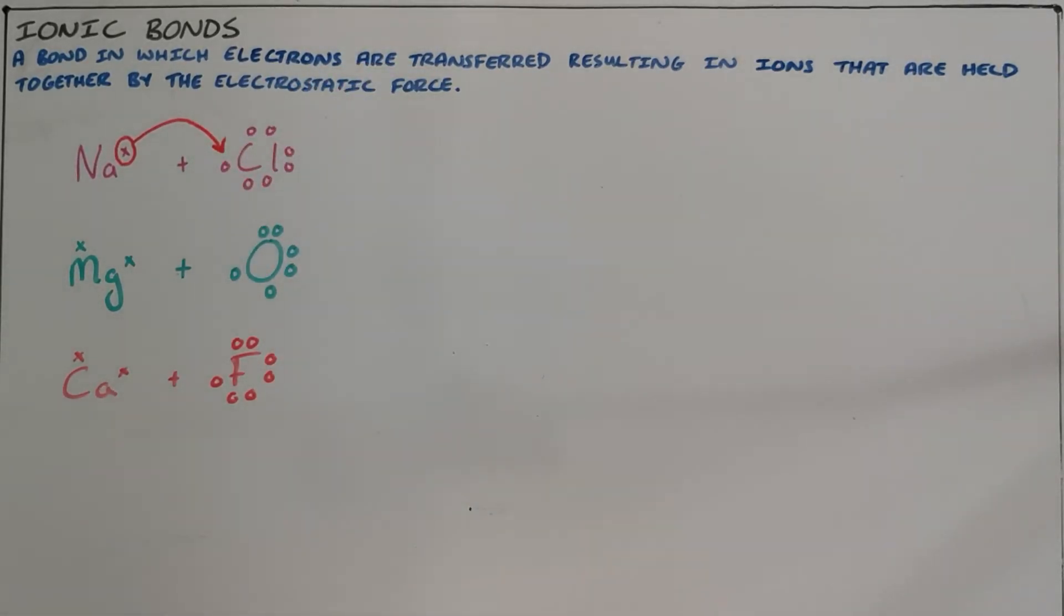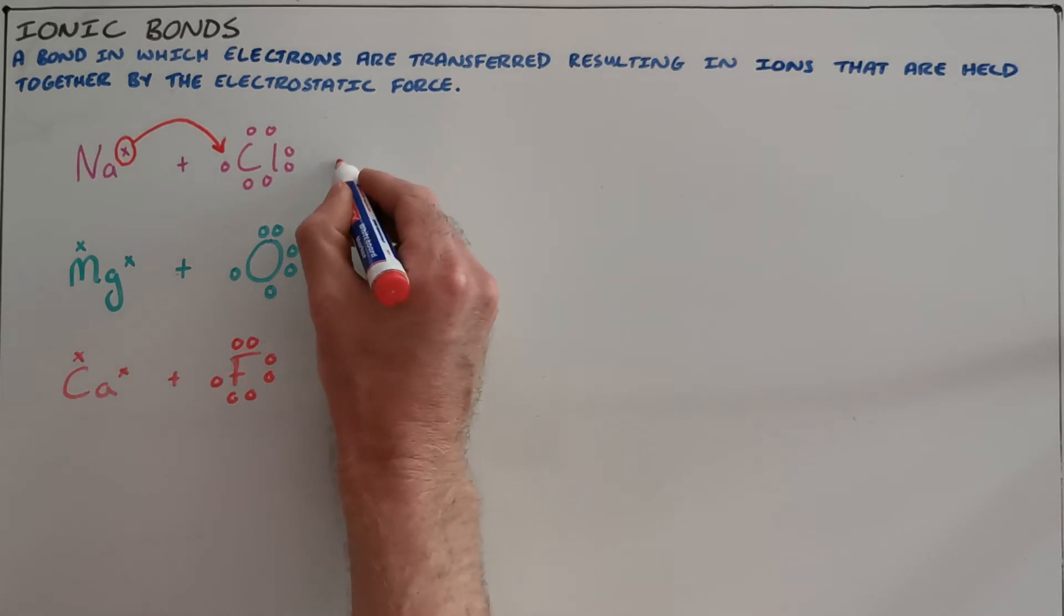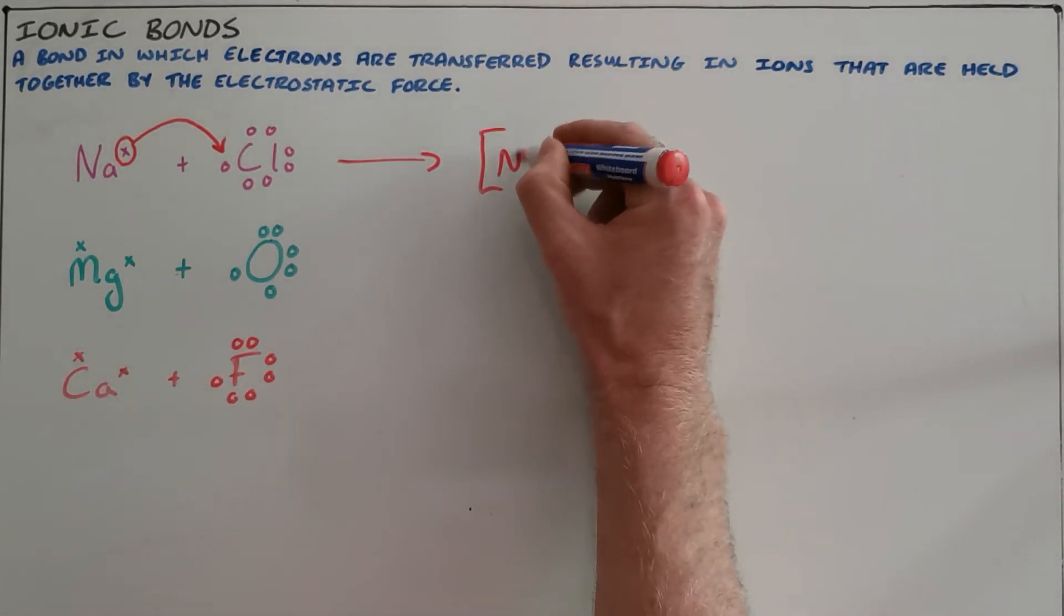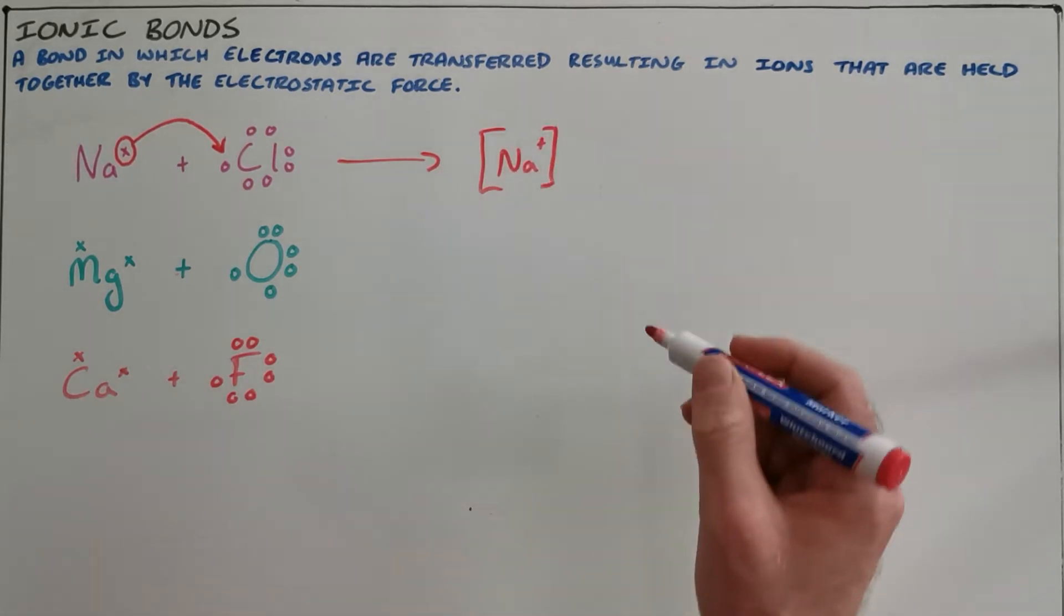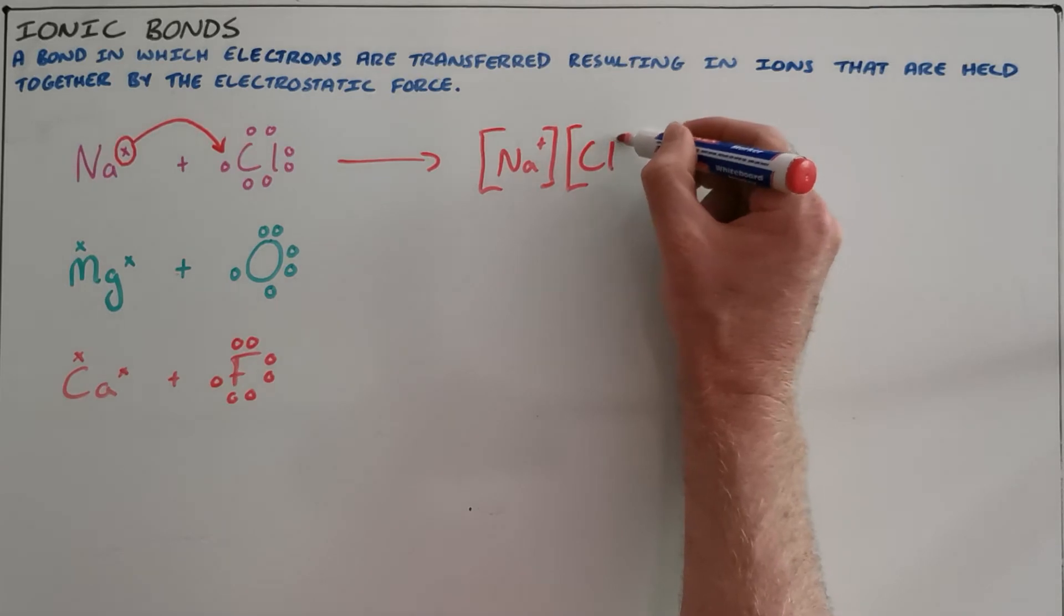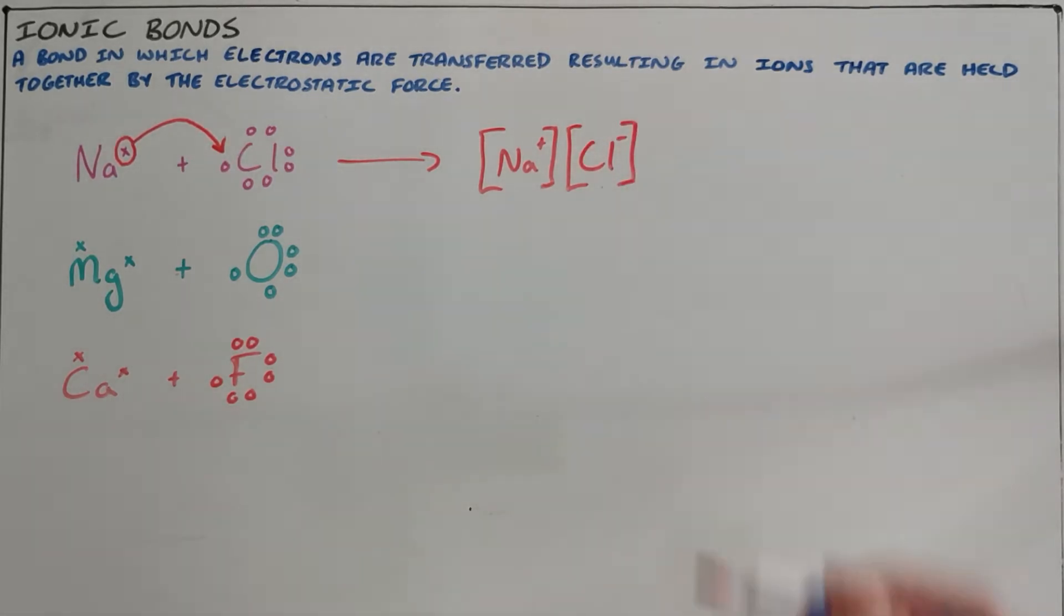We say transferred, but it is essentially taken by the chlorine, which leaves our sodium ion with a positive charge because it has lost an electron, and our chlorine ion which is now negatively charged because it has gained an electron.